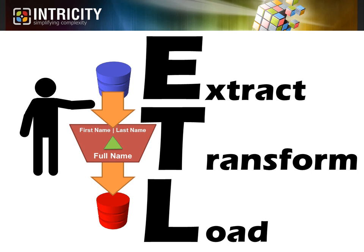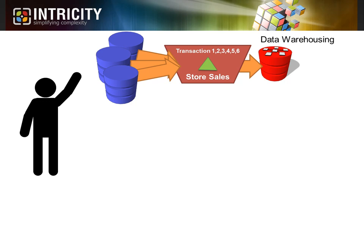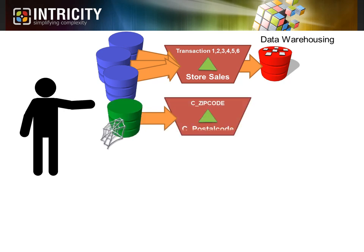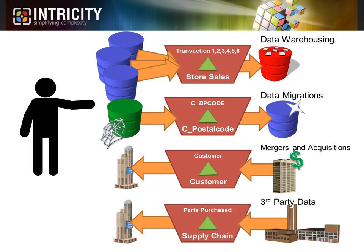These movements of data can be scheduled on a regular basis or triggered to occur. The types of projects that ETL tools are used for vary greatly, as these tools are built to be very flexible. Some common projects would be rolling up transaction data for business people to work with — which we commonly call data marts or data warehouses — migrating application data from old systems to new ones, integrating data from recent corporate mergers and acquisitions, and integrating data from external suppliers or partners.